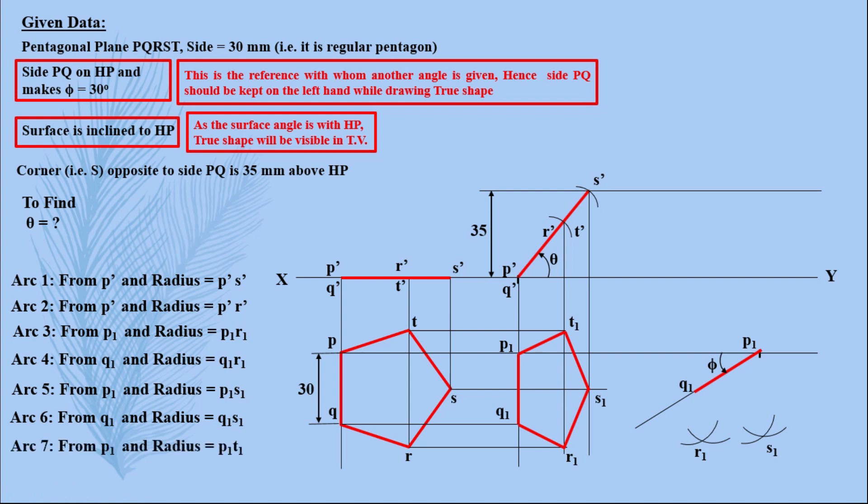Then use P1 T1 distance, that is P1 to T1 in your compass, keep your compass here, draw an arc. Then again use Q1 T1, keep compass here, take this distance in your compass, keep your compass here and cut this arc, name it as T1. Join the points in sequence: P to Q, Q to R, R to S, S to T and T to P again.